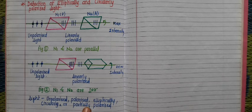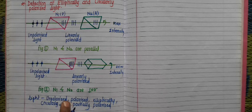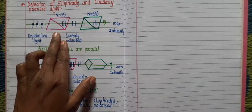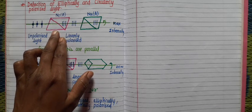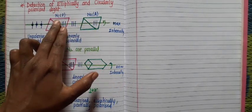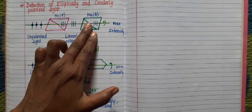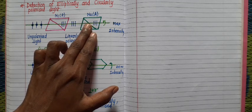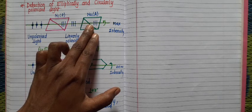That's why we can use a Nicol prism with a quarter wave plate to detect whether light is either elliptically or circularly polarized. We can use the Nicol prism in two ways: as a polarizer and as an analyzer. The polarizer is used to polarize unpolarized light, and the analyzer is used to check the state of polarization — whether the light is elliptically, circularly, unpolarized, or plane polarized.